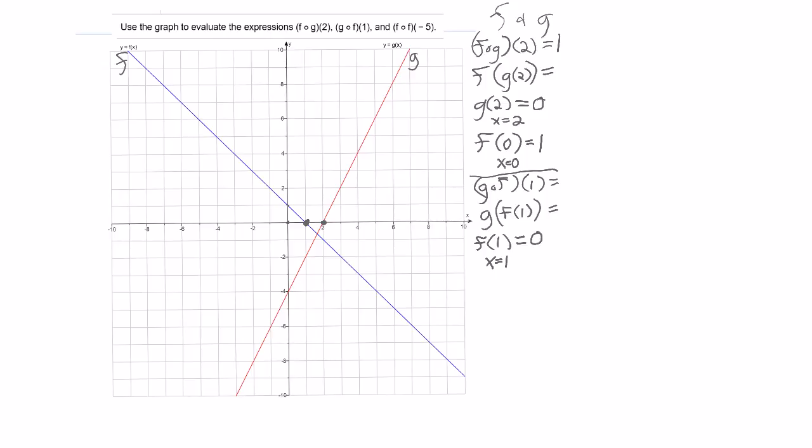That means I put 0 inside g. g of 0 means that at x equals 0, I have to find what the y-coordinate of the g function, the red function, is.